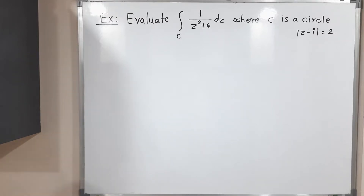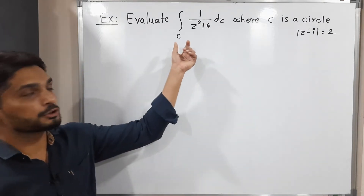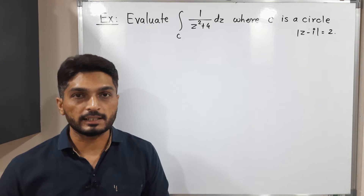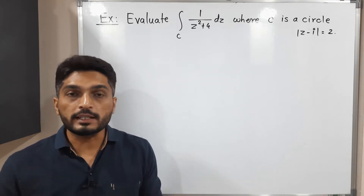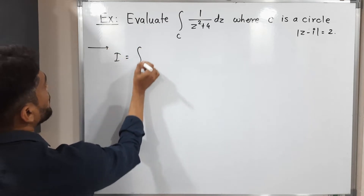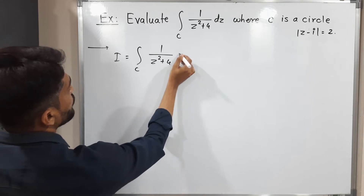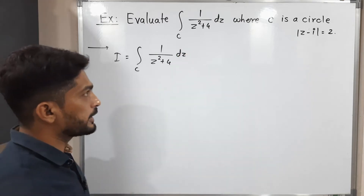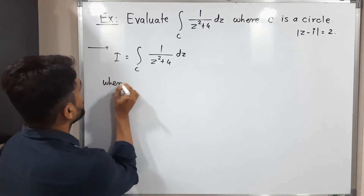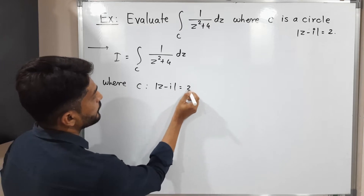Hi everyone. Let us discuss this example. In this example, we have to find the value of this integration, where C is a circle |z - i| = 2. So let us call the given integral as I. We have I equal to the integration over C of 1 upon z² + 4 dz, where C is the circle |z - i| = 2.